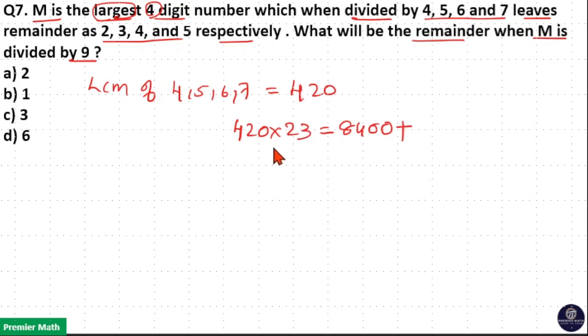Now 420 into 20 is 8,400. 420 into 3: 3 into 2 is 6, 3 into 4 is 12. So 8,400 plus 1,260 is equal to 9,660.